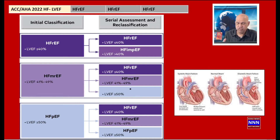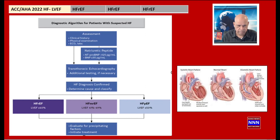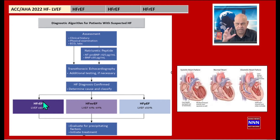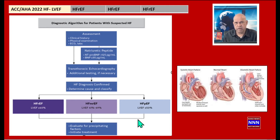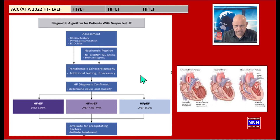To evaluate these patients, we take a clinical history, perform a physical examination, obtain an EKG, and measure BNP. Echocardiography is particularly useful in pinpointing what we are dealing with — it shows left ventricular size, wall thickness, systolic function, diastolic function, left atrial size, valve regurgitation, diastolic dysfunction via mitral pulse Doppler, wall motion abnormalities, pericardial effusion, and aortic valve stenosis.